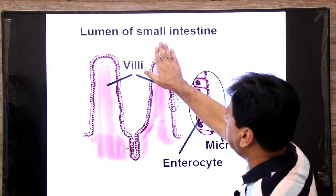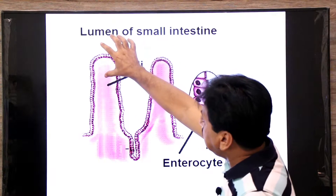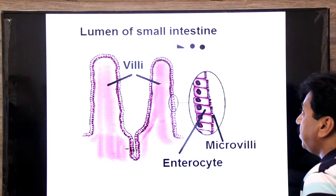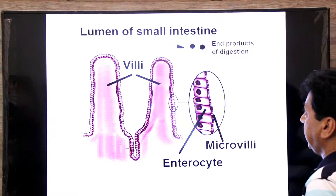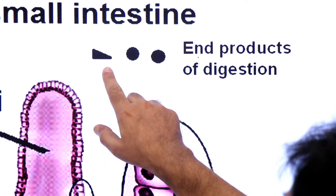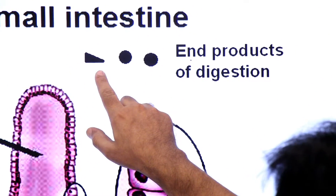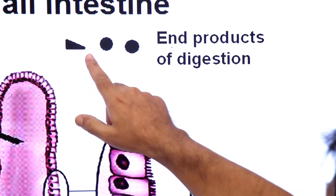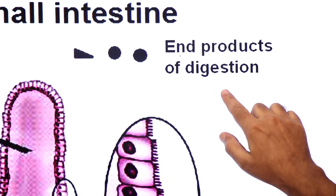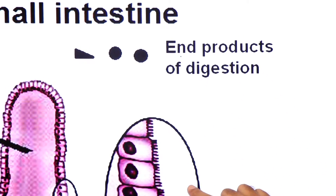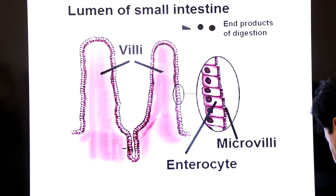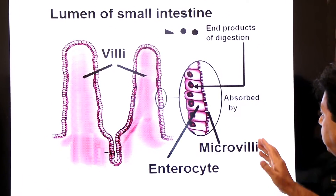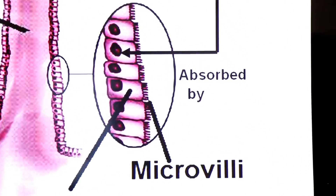The lumen is the space inside the intestine. In the lumen, the end products of digestion are present, including amino acids, fatty acids, and glycerol. These end products are absorbed by enterocytes through the microvilli.